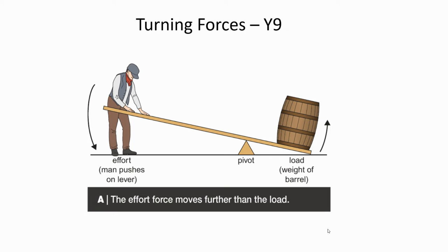In this diagram we have a person using a lever to lift a heavy barrel. The person cannot exert enough force upwards to lift the barrel, so instead they use a lever which multiplies the effort, creating a turning force or moment on the barrel.